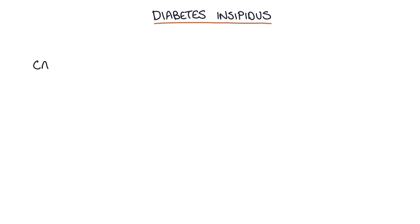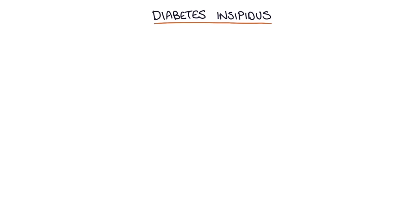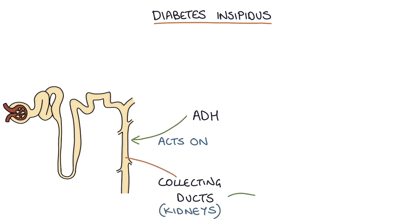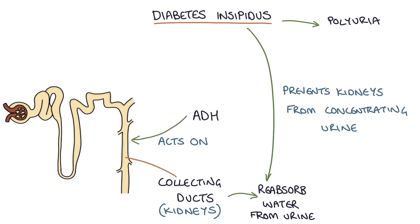Diabetes insipidus is caused by either a lack of antidiuretic hormone (ADH) or a lack of response to antidiuretic hormone. Remember that antidiuretic hormone acts on the collecting ducts in the kidneys and allows them to reabsorb water from the urine. So having diabetes insipidus prevents the kidneys from being able to concentrate the urine, and this leads to polyuria, or excessive amounts of urine, and polydipsia, or excessive thirst, because the blood is so concentrated.